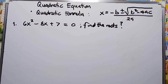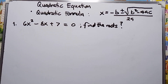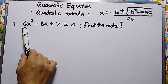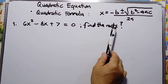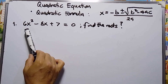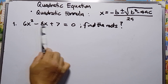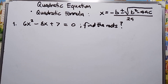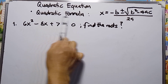Hello to my viewers. My math presentation today is about quadratic equations, intended for grade 9 students and students majoring in mathematics. Problem number one: 6x squared minus 8x plus 7 equals 0. Find the roots x1 and x2. Since this is impossible to factor using simple factoring, we have to use the quadratic formula.